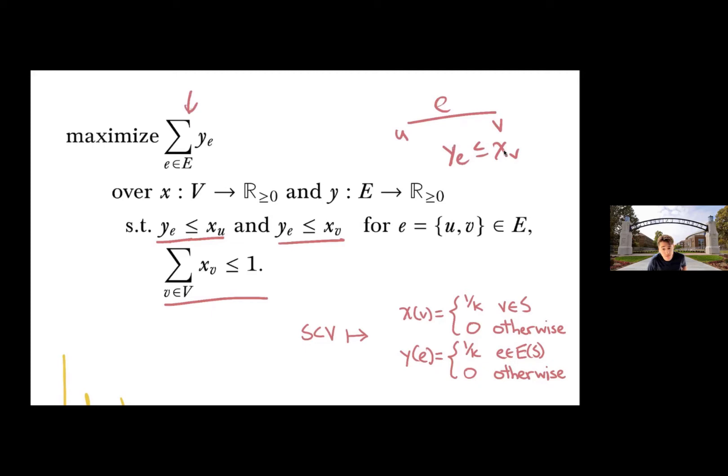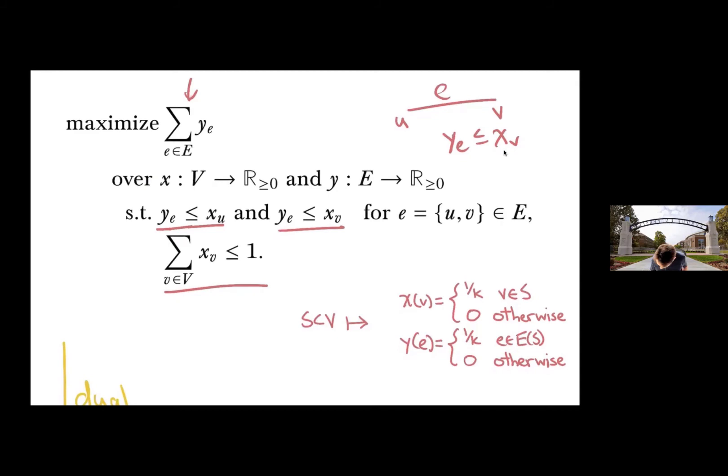So this relaxation is, given a set S if I want to turn it into a feasible thing, and I let K be the number of vertices in S, I'll assign one over K to all the vertices and then one over K to all the edges inside S.